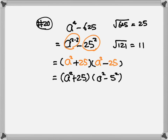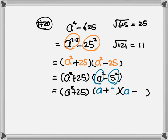Keep a squared plus 25 for the first parenthesis. For the second parenthesis, keep a squared minus 25, and change 25 to 5 squared since we can use the formula one more time. Draw two more parentheses — one plus, one minus — put a in each one, then 5 in each one. Remember: every time it's to the fourth power, your final answer will have three parentheses. If it's squared, you only have two parentheses at the end.